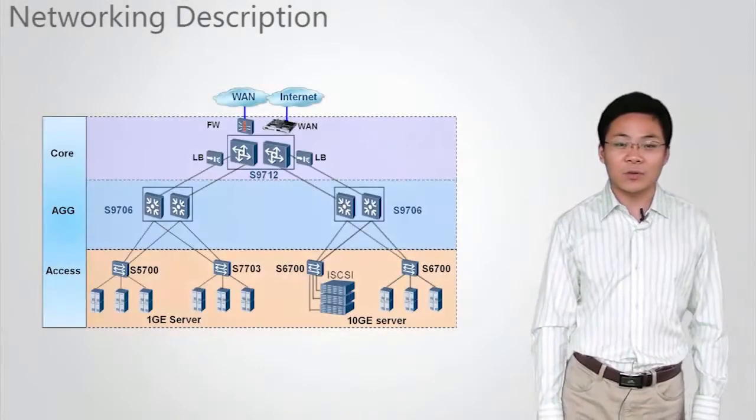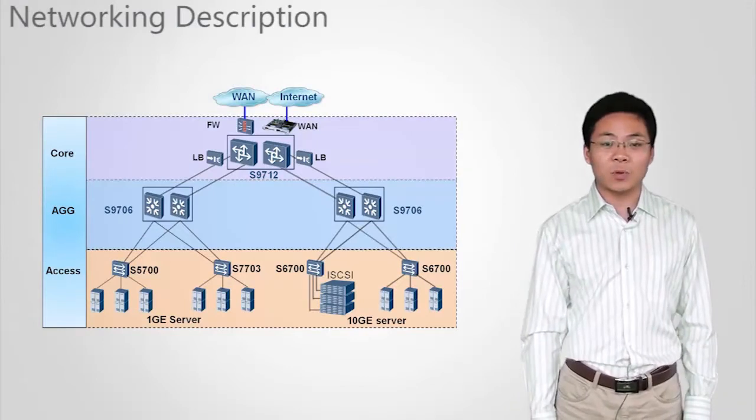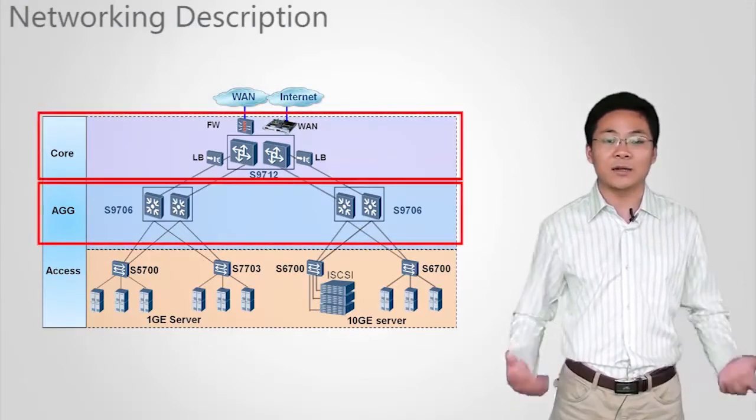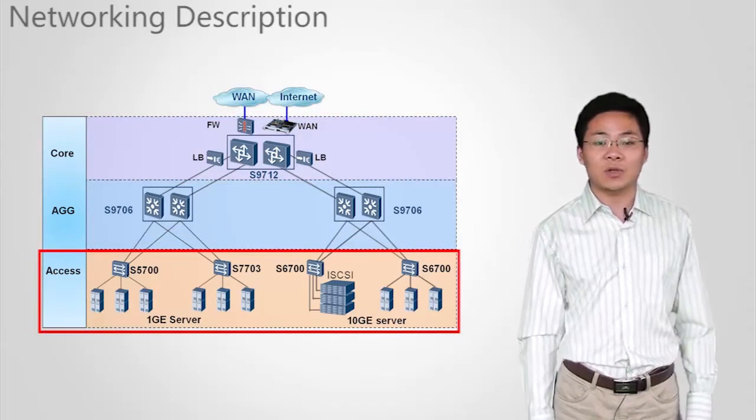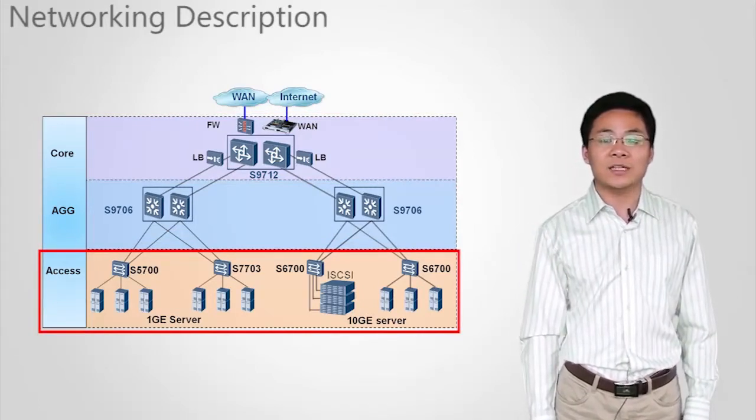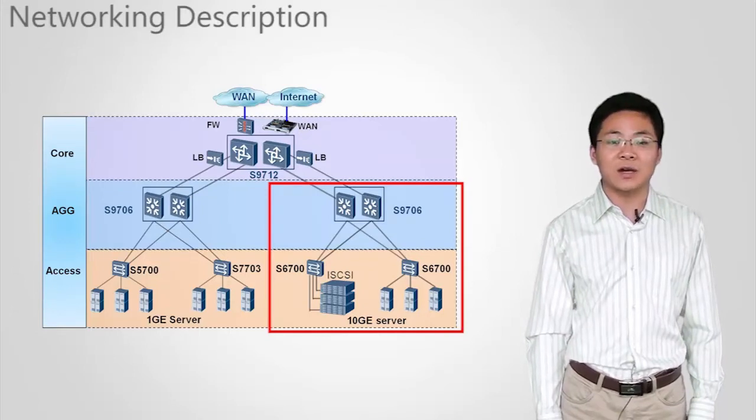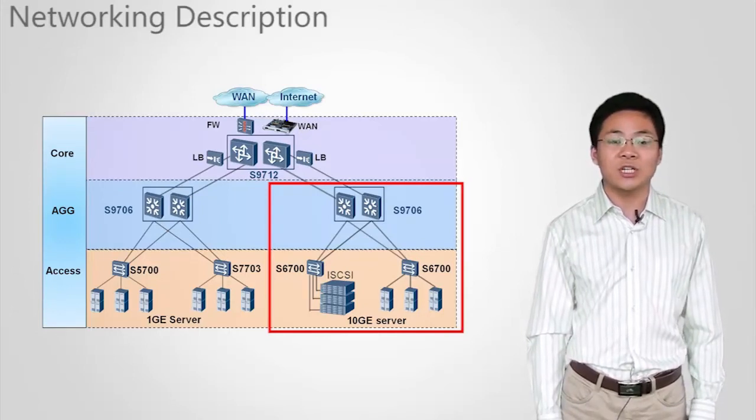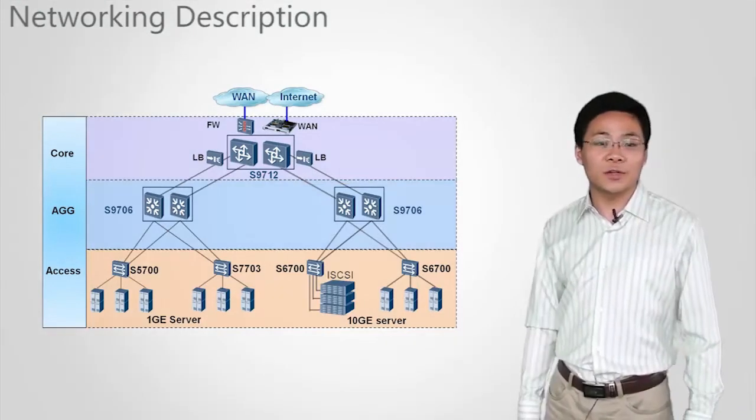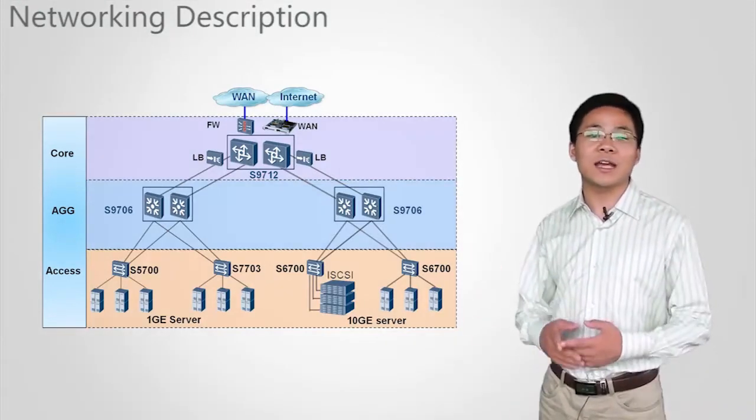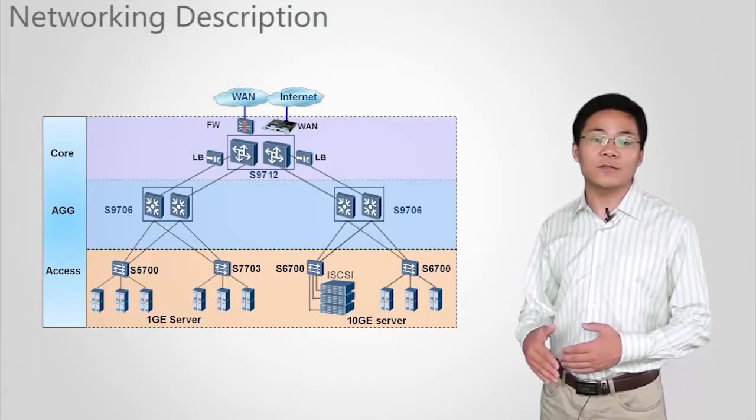Now let's learn the applications of S9700 switches on data centers. On a data center network, S9700 is deployed at the aggregation and core layer. S7700 and S series box switches are deployed at the access layer. S9700 switches provide a high-density of high-performance 10GE interface boards. 10GE servers and virtual machines can be connected to the network through these interfaces.